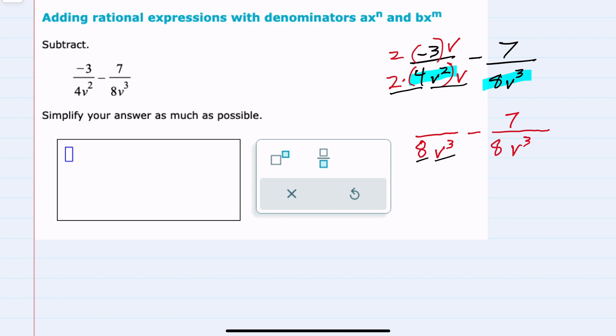In the numerator though, 2 times negative 3 is negative 6. And we have the v there as well. And now that we have a common denominator, we can do this subtraction.